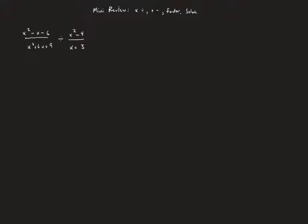The first one here is a division. I'm going to do this by flipping and factoring. I'll factor the numerator of the first rational expression: x squared minus x minus 6 factors into x minus 3 times x plus 2. The denominator x squared plus 6x plus 9 factors into x plus 3 times x plus 3. I'm going to multiply by the reciprocal — that's the flipping part — putting the denominator as the new numerator. The x squared minus 4 factors as the difference of two squares into x plus 2 times x minus 2.